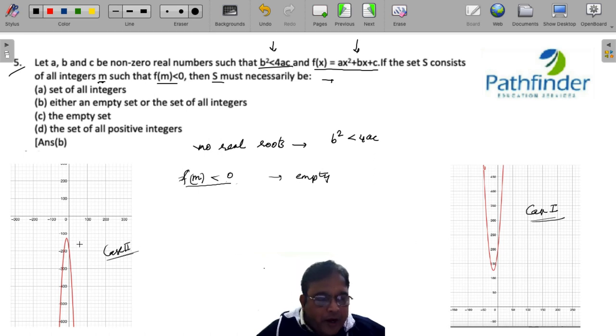And if your quadratic polynomial is like that in case 2, then your set will be set of all integers because for every integer the graph is less than 0. So f(M) is less than 0.